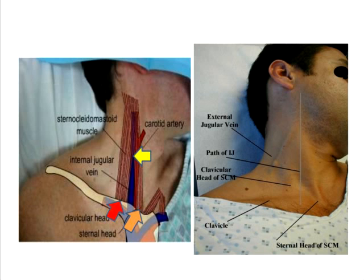First, let us identify the two heads of the muscle sternocleidomastoid, or just sternomastoid. It has a medial head called the sternal head — you can see the orange arrow on the bottom showing the sternal head inserted into the sternum. Next, the clavicular head of sternomastoid is indicated by the red arrow shown at the bottom, and you can see that it is positioned laterally.